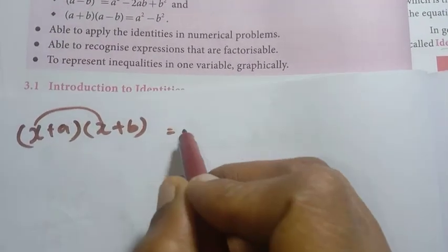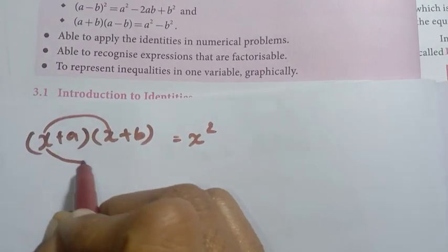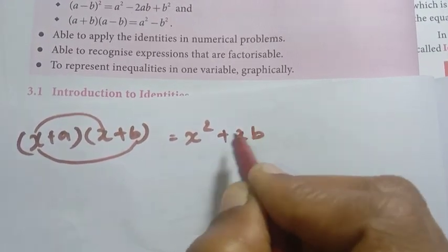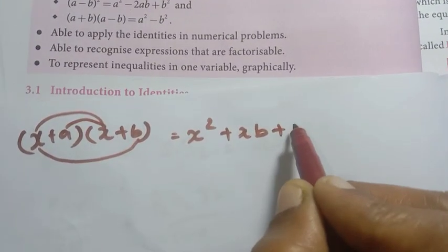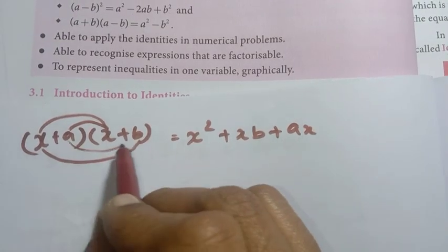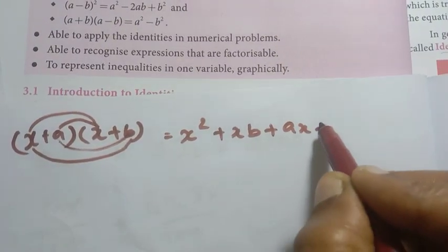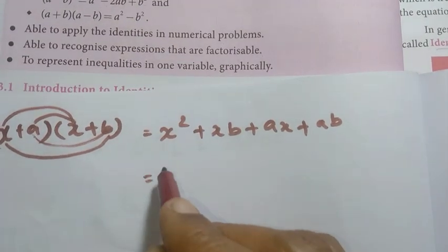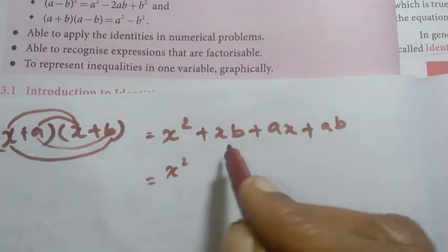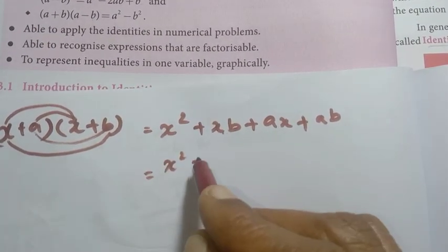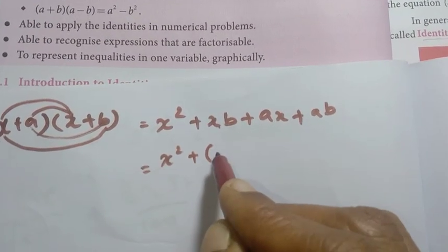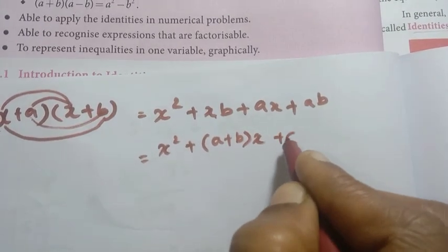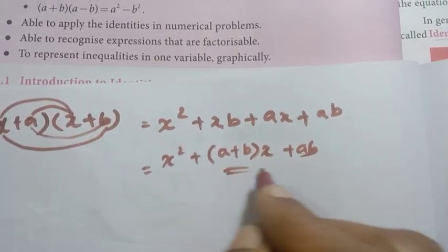Now let's derive x plus a into x plus b. We expand: x into x is x squared, x into b is xb, a into x is ax, a into b is ab. Collecting terms: x squared plus a plus b into x plus ab. That matches the formula on the right hand side.